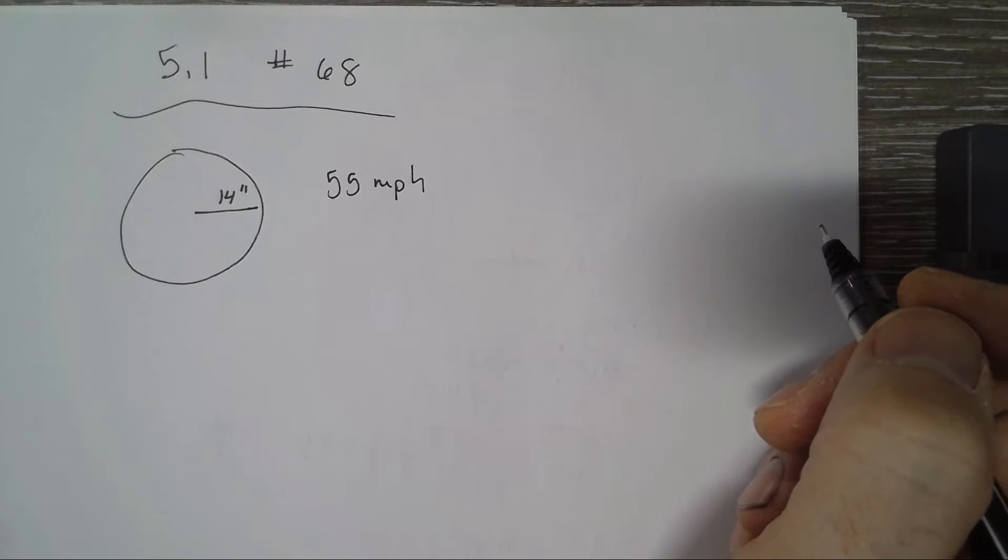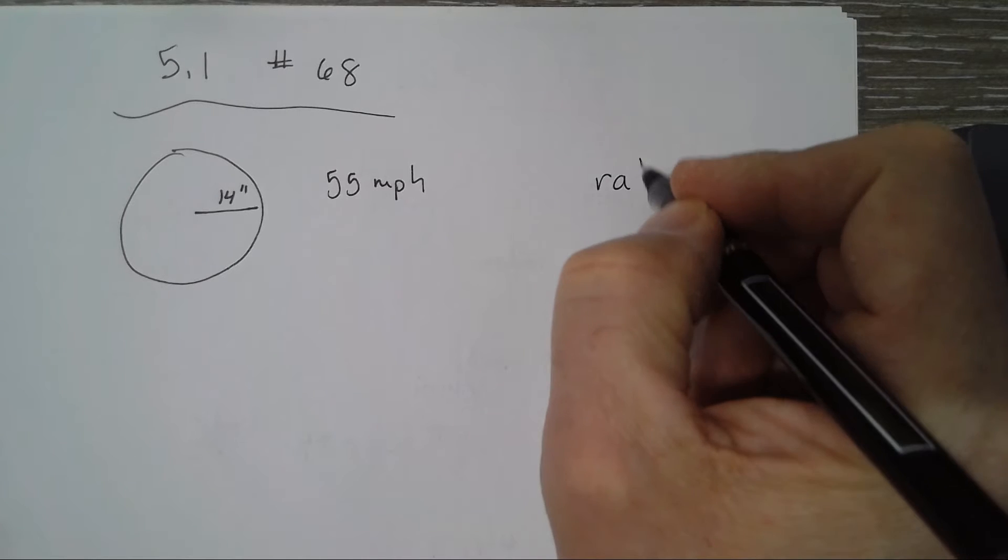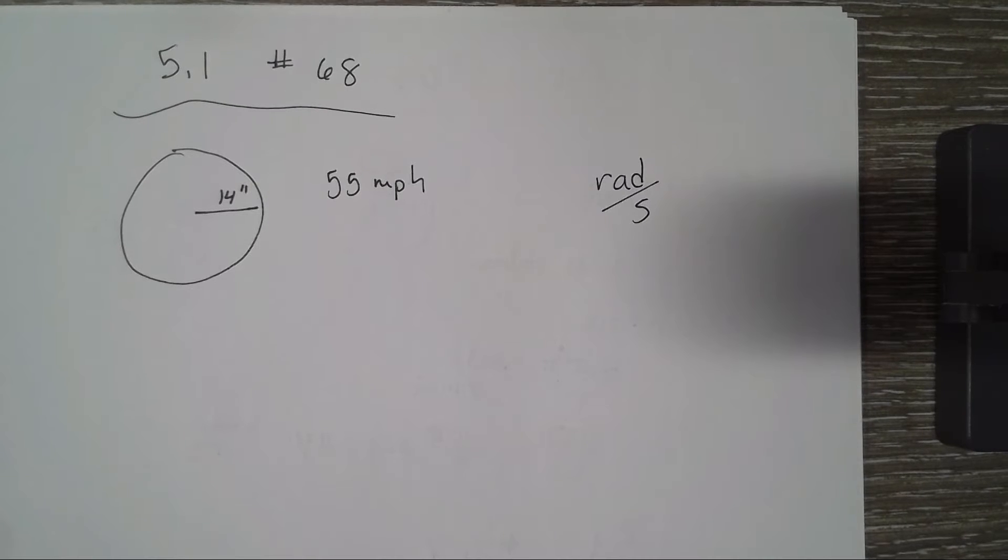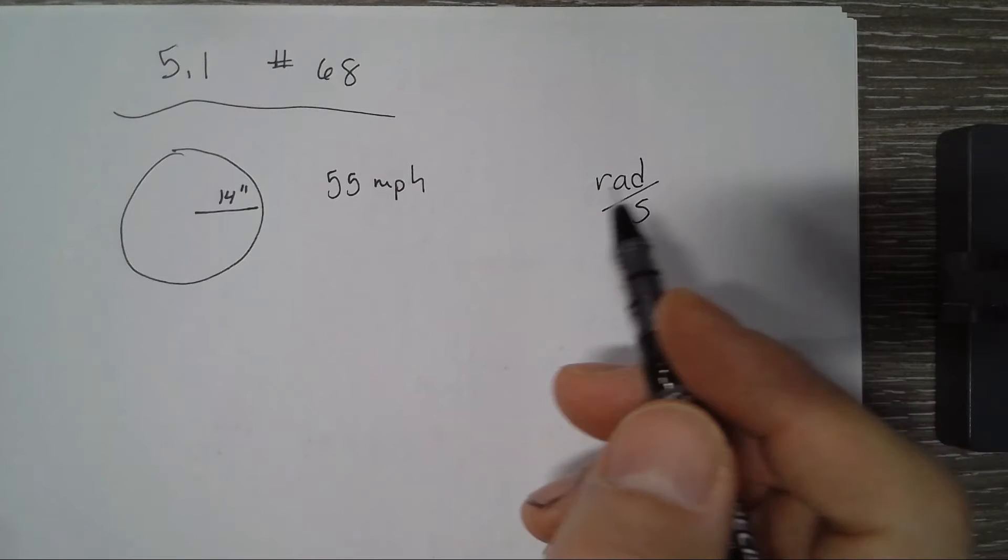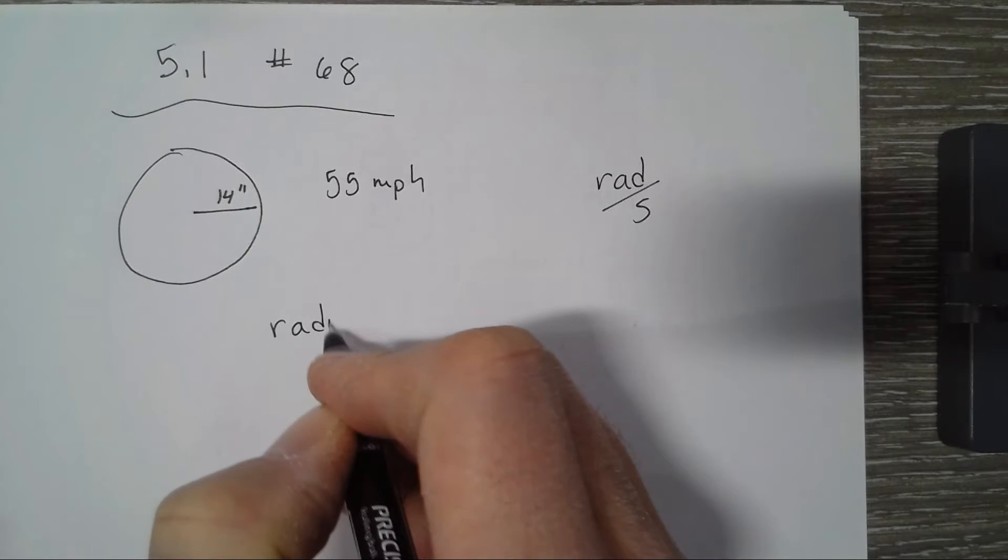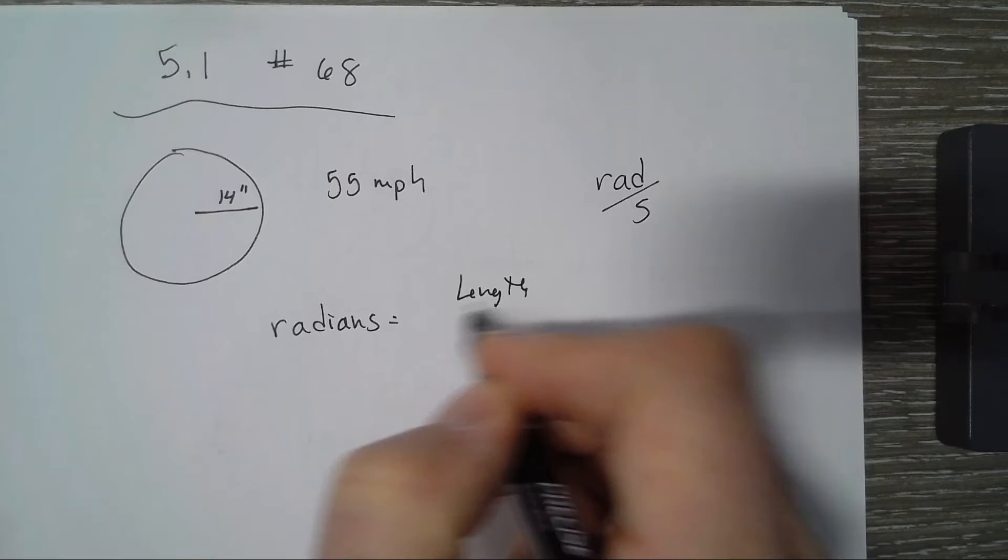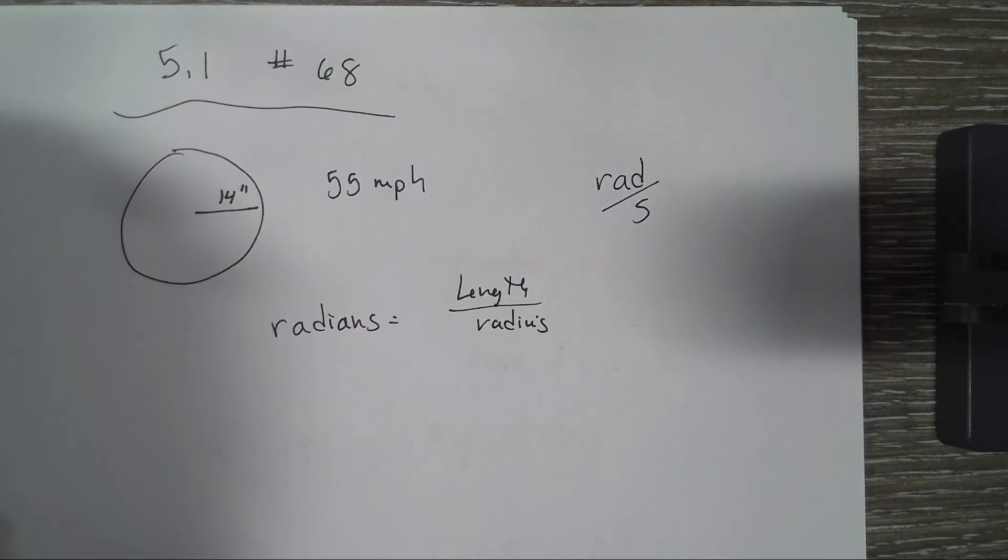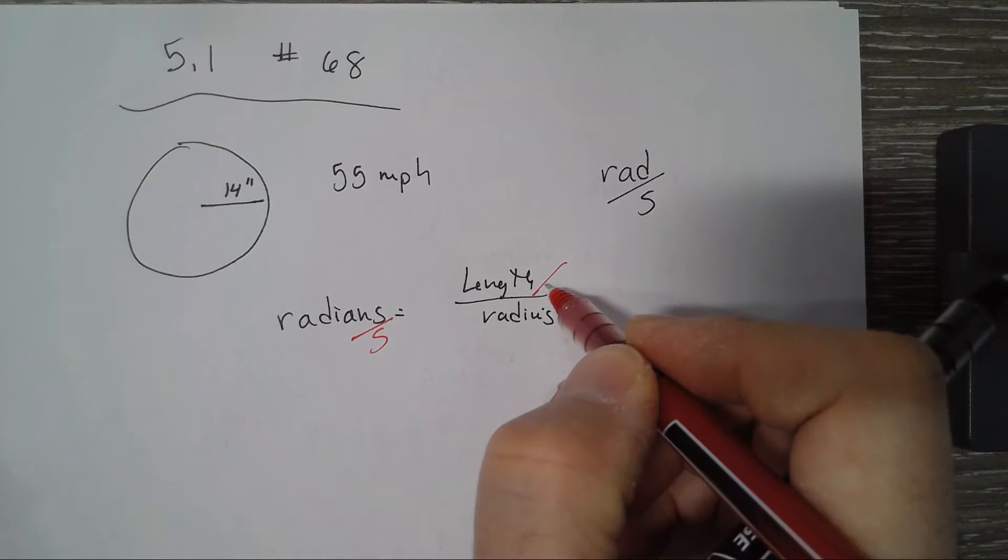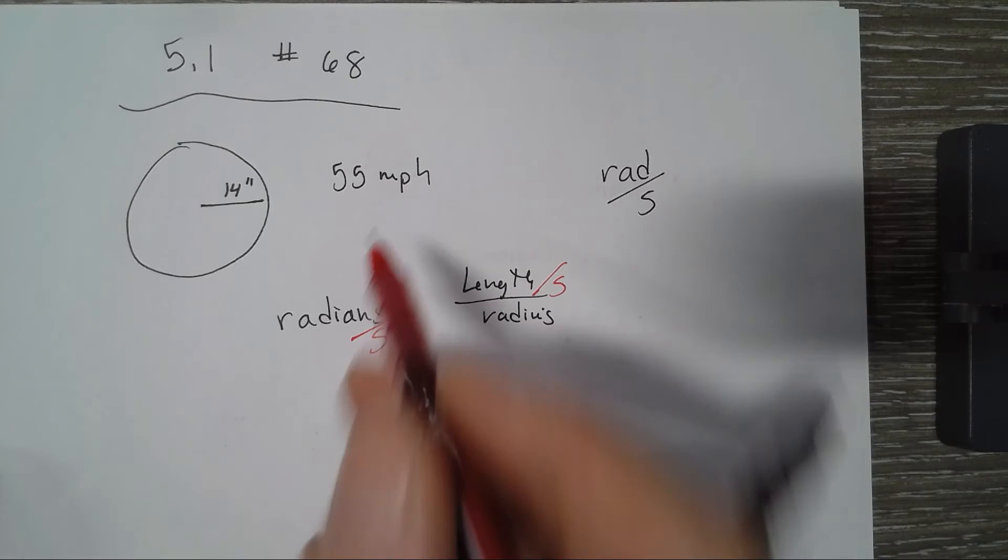Find the angular speed of the wheel in radians per second. We're looking for the radians per second, so an angular speed. We can go back to our formula: radians equals the length divided by the radius, so radians per second is some length per second over the radius. The lengths have to be in the same units.